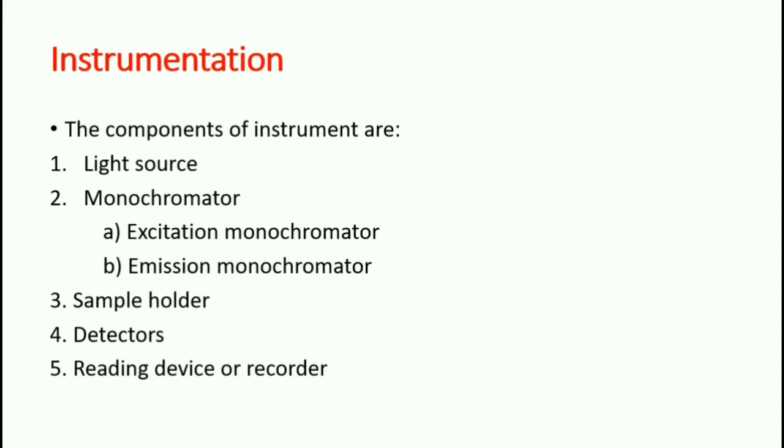The components of the instrument are light source, monochromator. There are two types of monochromator used in Fluorescence Spectroscopy: excitation monochromator and emission monochromator. We will study the difference between these monochromators later in this video. Third is sample holder, fourth is detector, fifth is reading device or recorder.